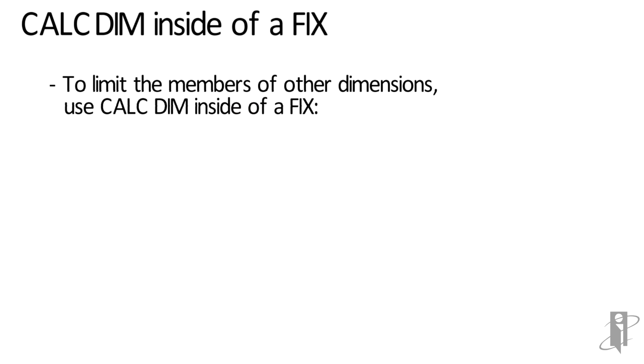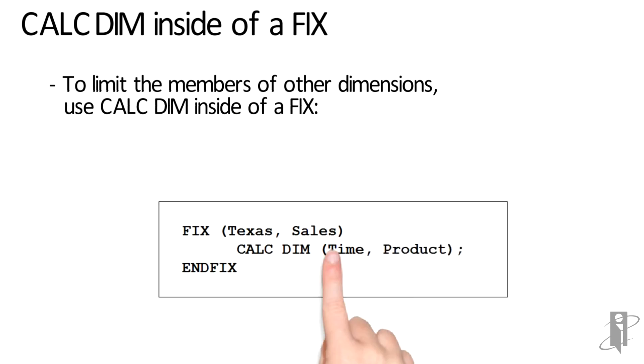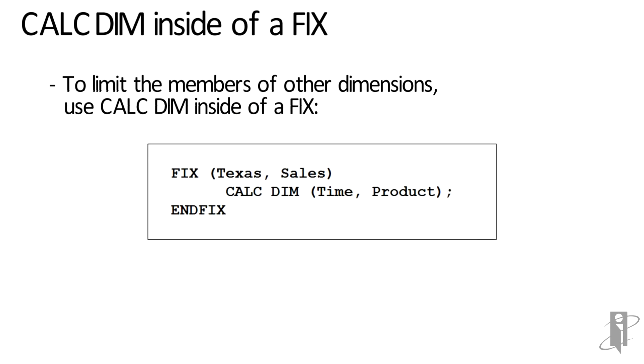You can use calcdim inside of a FIX statement — just fix on members from other dimensions. You can't fix on members you're going to aggregate inside the calcdim. So for example, fixing on the state of Texas and then running calcdim on time and product.